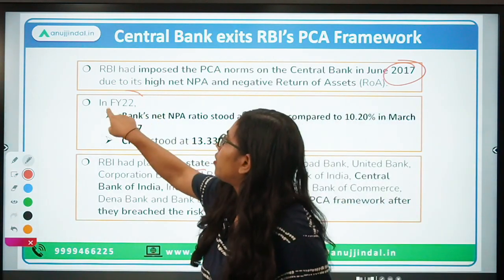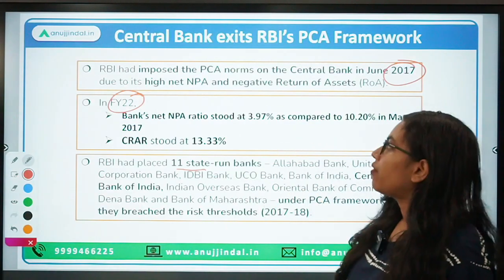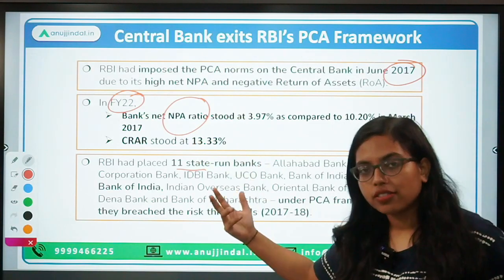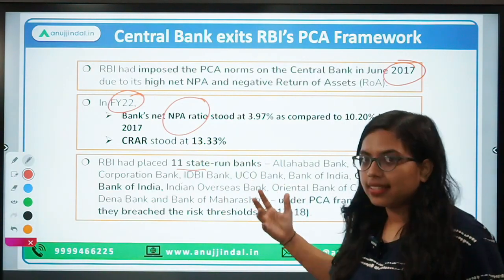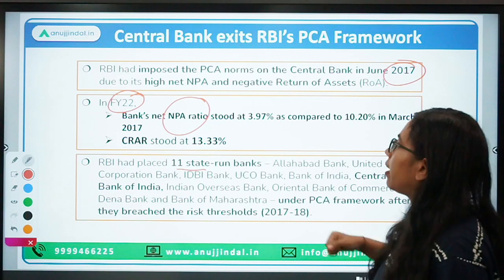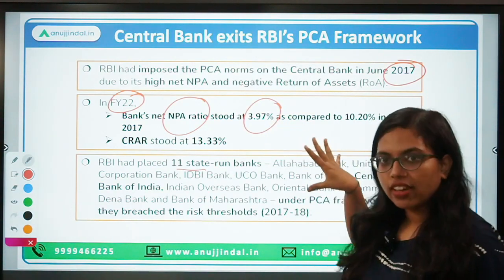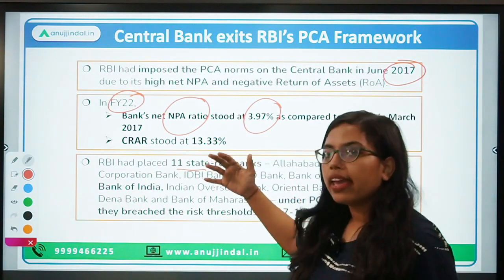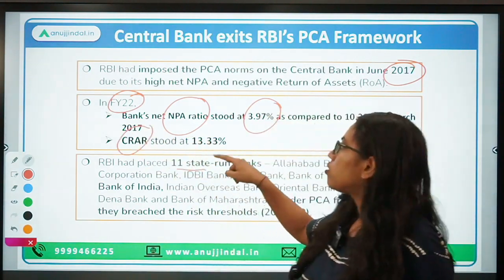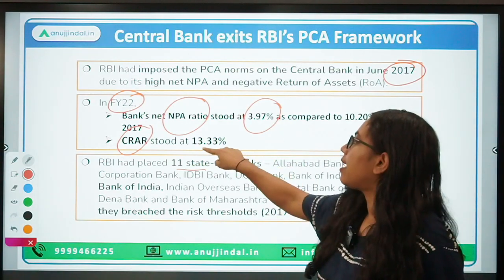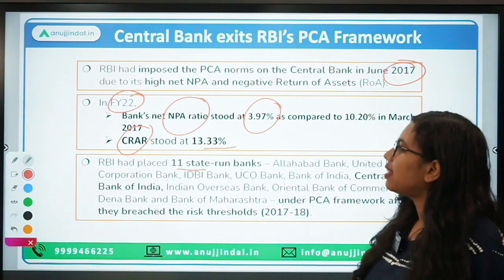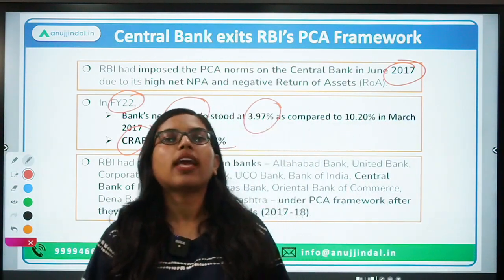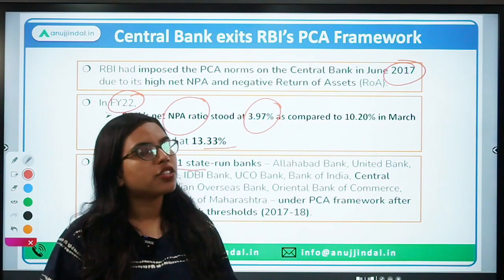For financial year 2022, Central Bank of India has performed well on the NPA ratio — Non-Performing Assets ratio — and it now stands at a very low rate of around 3.97%, approximately 4%. Its Capital Adequacy Ratio (CAR) is also very high at around 13%, and that's the reason why it has been removed from the PCA framework.